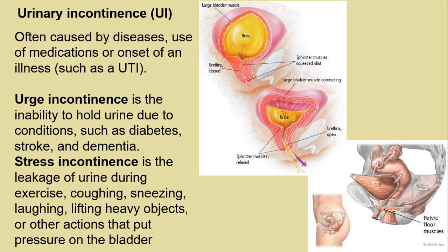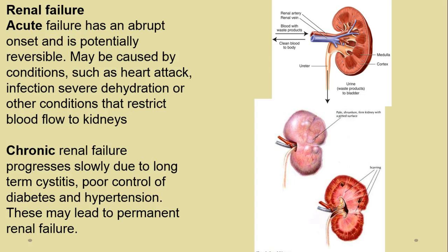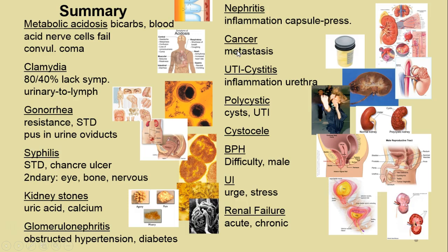Renal failure is very serious. It can be acute — occurring during a heart attack, intense infection, dehydration, or anything that restricts blood flow to the kidneys. Chronic renal failure is often asymptomatic; the person may not be aware of it. It can be a long-term result of cystitis, diabetes, or hypertension influencing blood flow, ultimately leading to renal failure and death if something isn't done quickly.